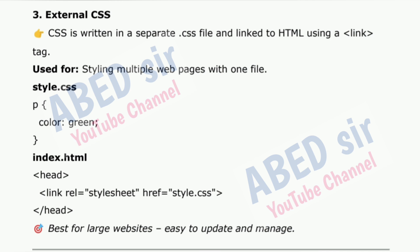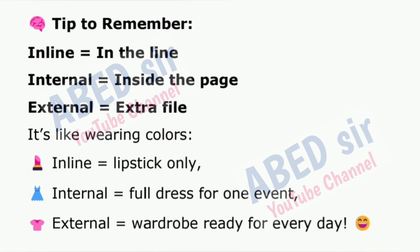3. External CSS: written in a separate .css file and linked to HTML using a link tag; used for styling multiple web pages with one file. For example, style.css contains: p { color: green; } and index.html links it with &lt;link rel='stylesheet' href='style.css'&gt;. Best for large websites — easy to update and manage. Tip to remember: Inline = in the line; Internal = inside the page; External = extra fine. Like wearing colors: Inline = lipstick only; Internal = full dress for one event; External = wardrobe ready for every day.